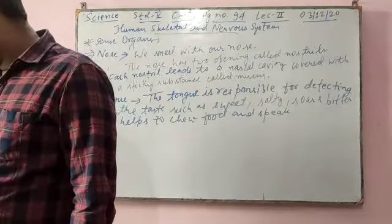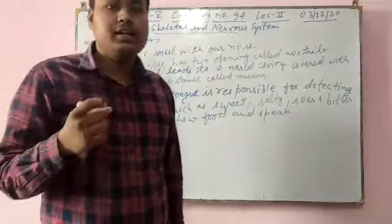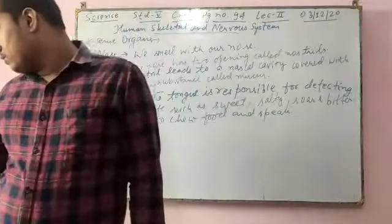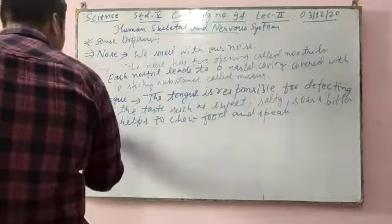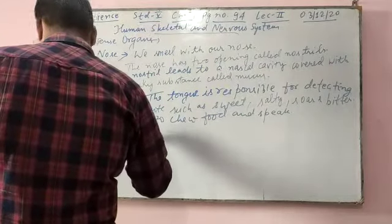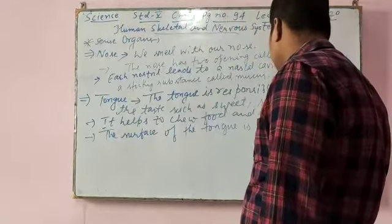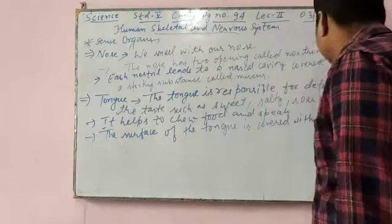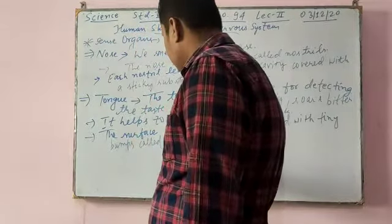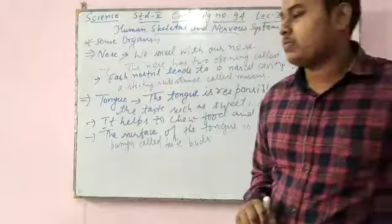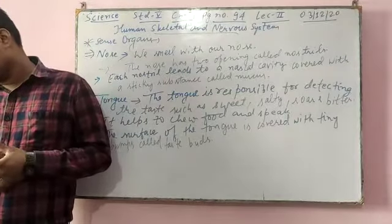The surface of the tongue is covered with tiny bumps called taste buds. With the help of these, we can recognize the taste of food. The taste buds connect to the brain. The taste buds identify different tastes and send a signal to the brain.